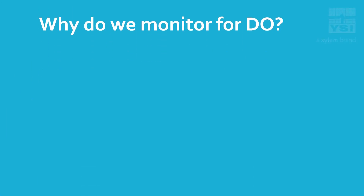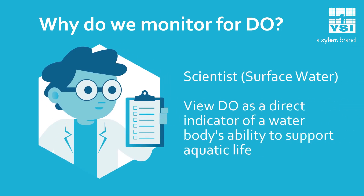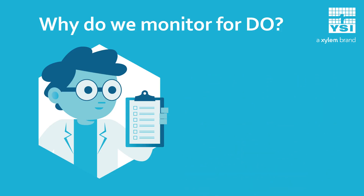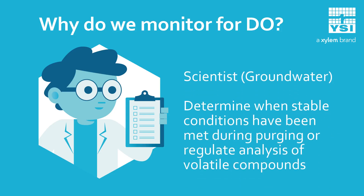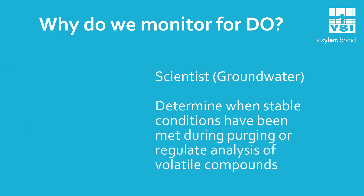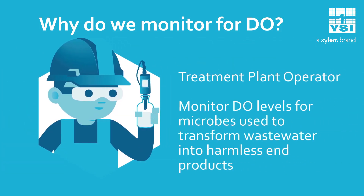So why do we monitor for dissolved oxygen? A scientist interested in surface water would view it as a direct indicator of a water body's ability to support aquatic life. A scientist studying groundwater could use DO to help determine when stable conditions are met during purging, or to regulate the analysis of metals or volatile compounds. A treatment plant operator would be concerned with DO levels for the microbes used to transform wastewater into harmless end products.